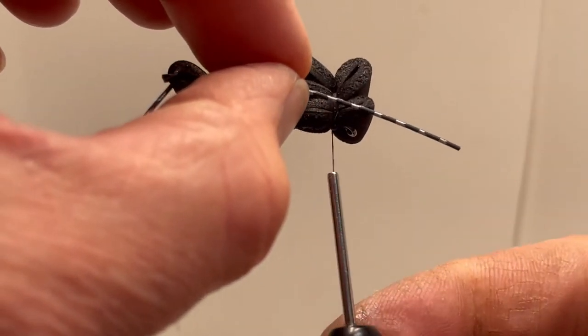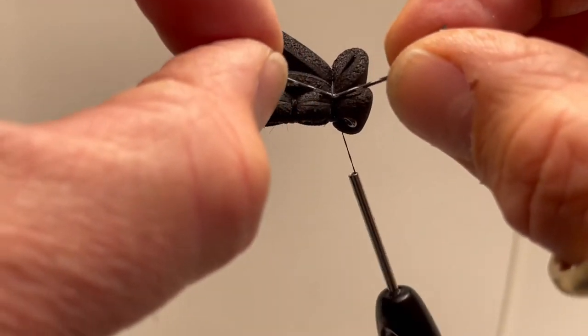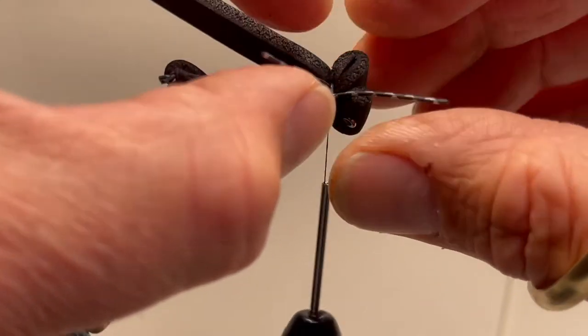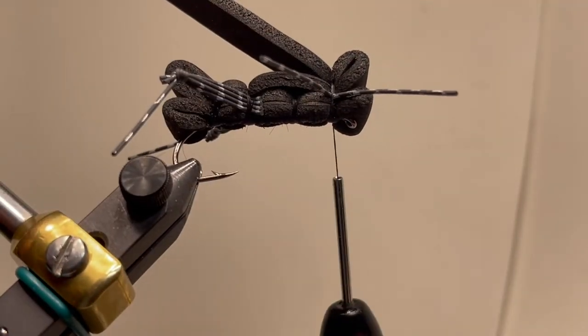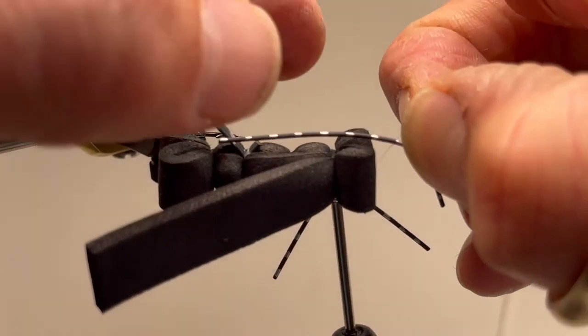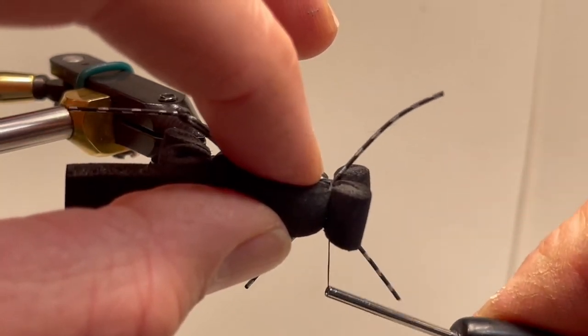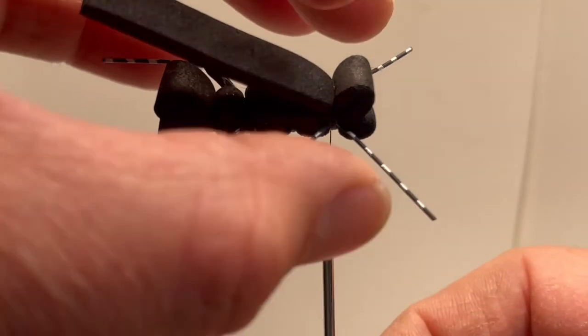Set of rubber legs on your side. I like to go right in between those foam heads. That way it's easier to get that leg situated and not flare too much. Same on the other side. Looks good.